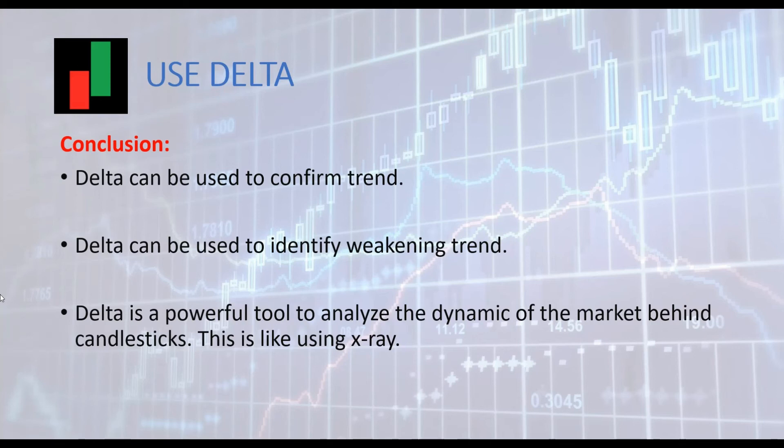Now as a conclusion: we saw that delta can be used to confirm strength of trend. We also saw that delta is useful to identify weakness of the trend. Thanks to delta we can identify the end of the trend and exit trades with very good timing. Delta is indeed a very powerful tool to analyze the dynamic of the market and see beyond the price action. Using delta is like having an x-ray device — delta can really give you an edge in the market.